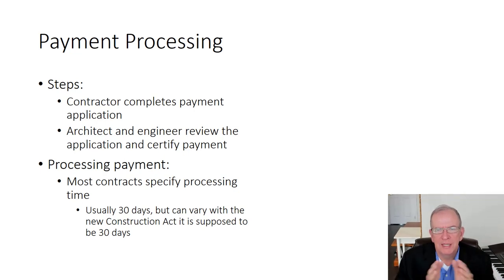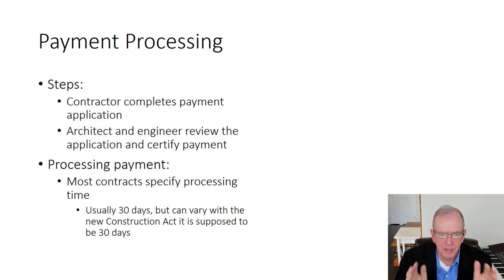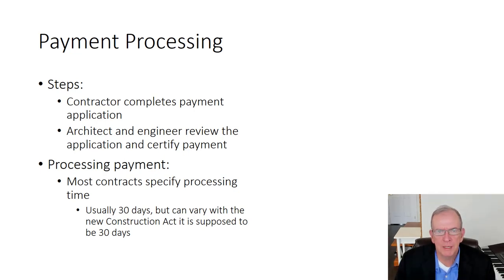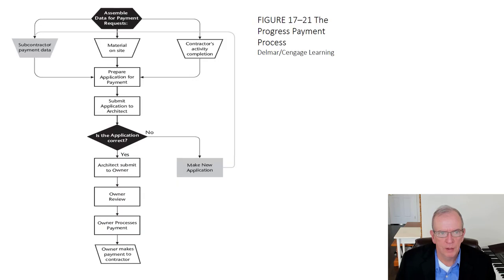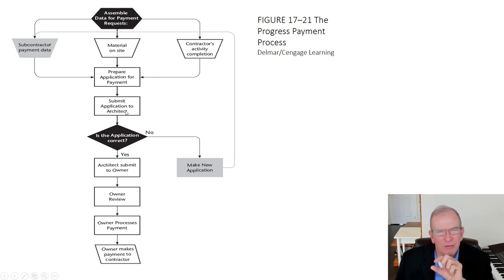The Ontario Construction Act came about because payment timelines were stretching — when I was running a construction business it was around 30 days, then it became 45 days, then 60 days, and some European contractors were pushing even longer. The government put a clamp on it because extended payment periods can make construction companies go bankrupt. The goal is to make it more regimented so people aren't taking advantage of others. The process flow is: assemble data, confirm activity completion, prepare the progress payment application, and submit it to the consultant.